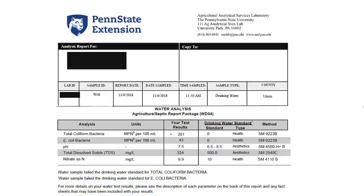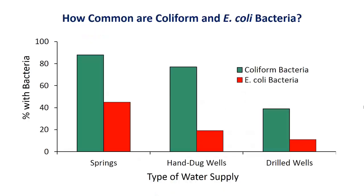Here's a different water test report showing a water supply that has a bacteria problem, with more than 201 colonies of coliform bacteria and 43 colonies of E. coli bacteria. In this case, the homeowner should act to solve the problem. A Penn State study of wells and springs found that both coliform bacteria and E. coli bacteria were much more common in springs and shallow hand dug wells, and less common in deeper drilled wells. Note that about 90% of springs had coliform bacteria, while only 33% of drilled wells had coliform.